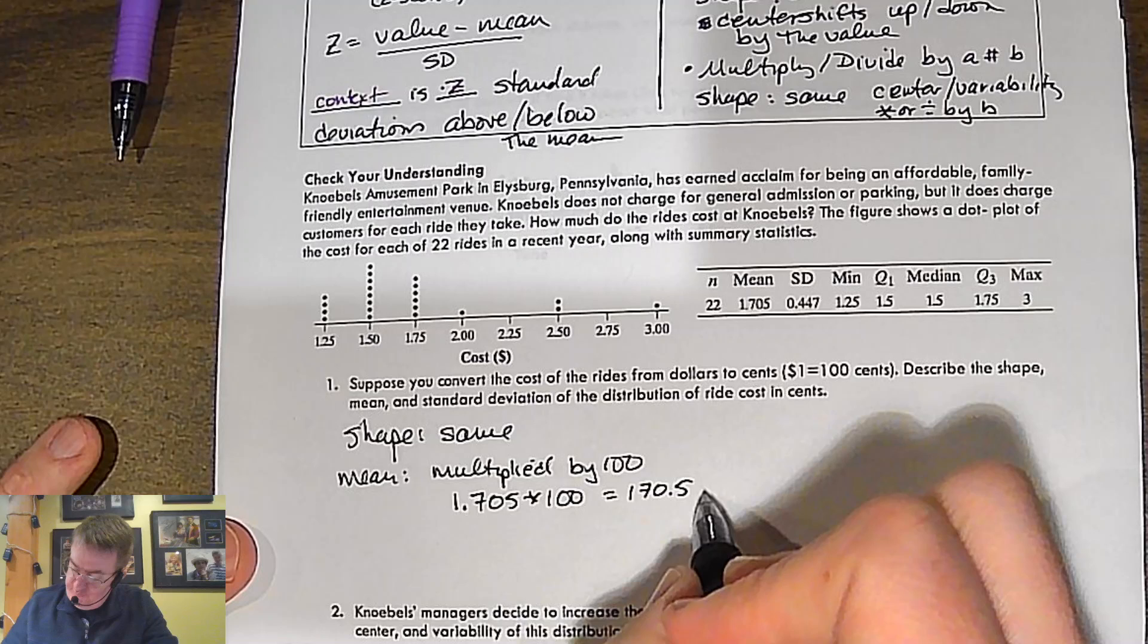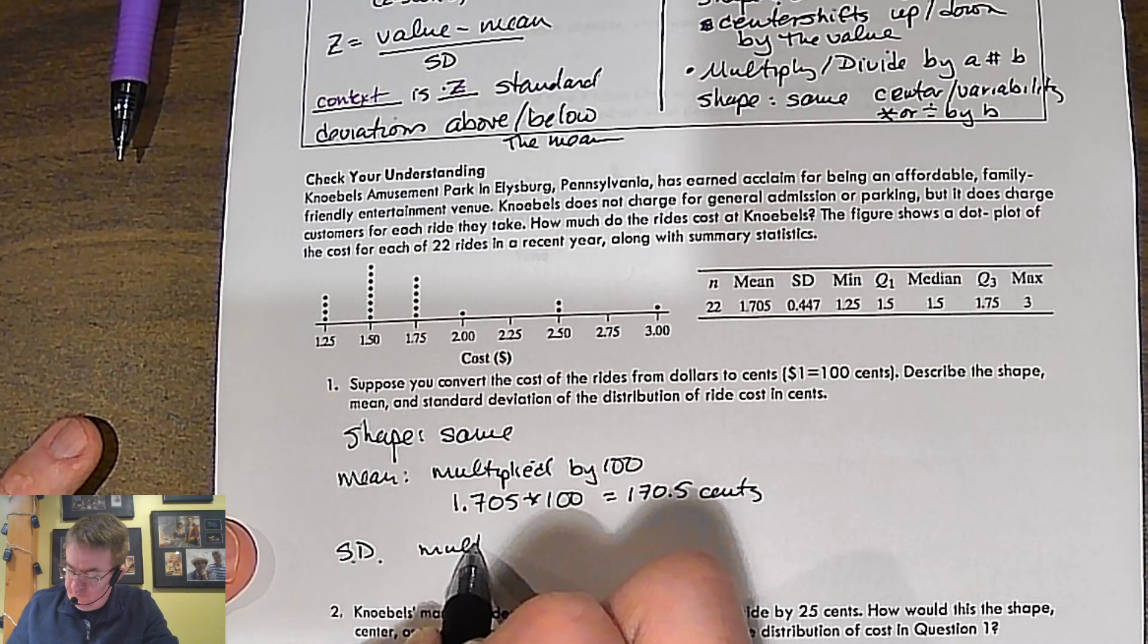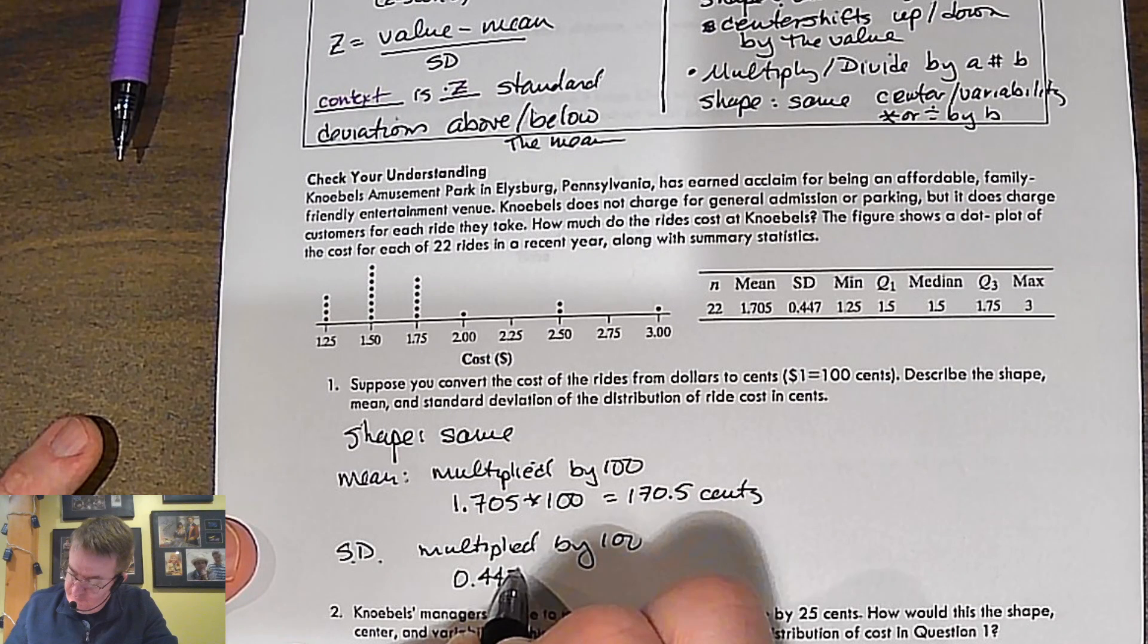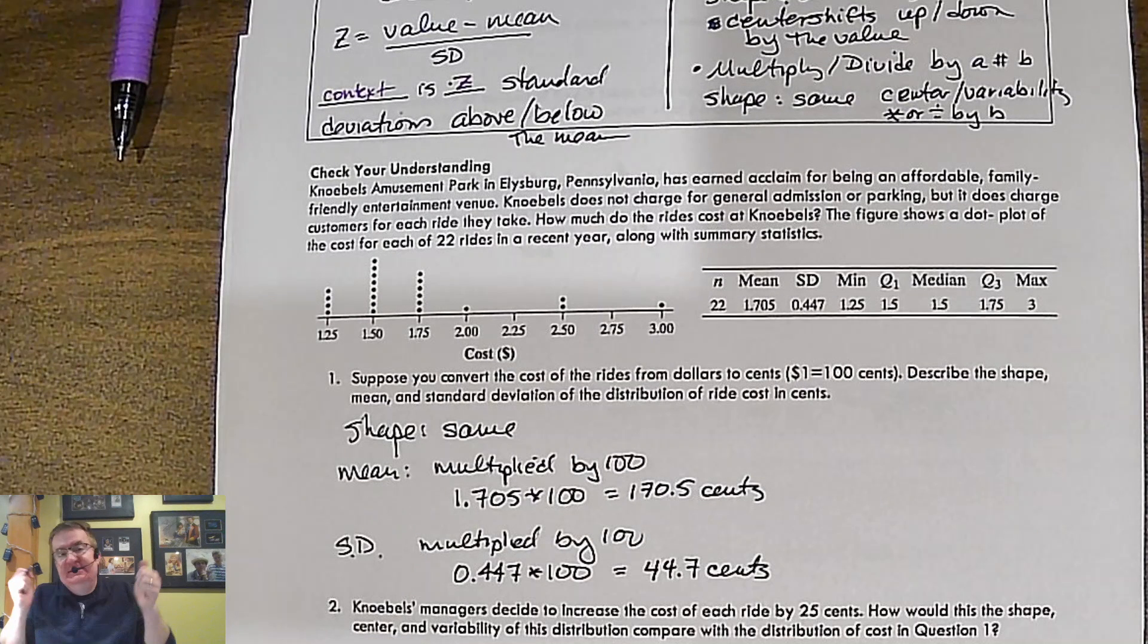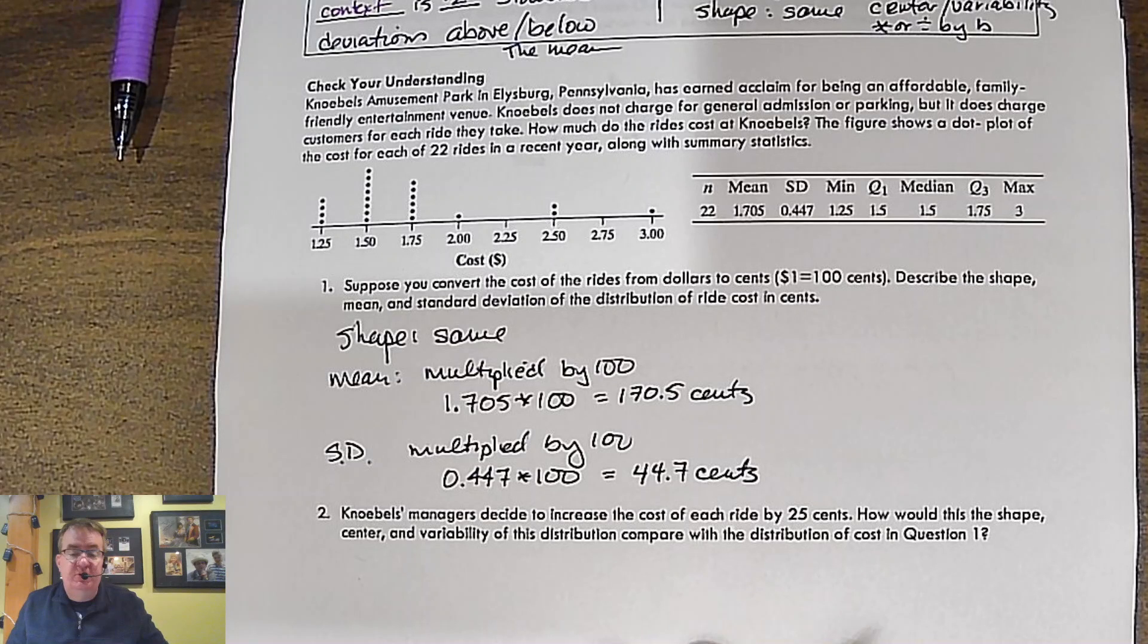And your variability, standard deviation, that is also going to be multiplied by 100. So our standard deviation over here, about 45 cents. So our new standard deviation is going to be 44.7 cents. Why is that important? Well, I mean, depending upon how you're arguing things, you may be doing it in terms of dollars. You may be doing it in terms of cents. It's just good to know how it works.